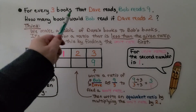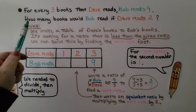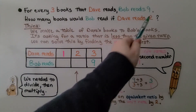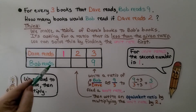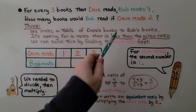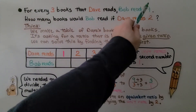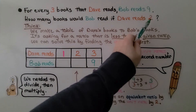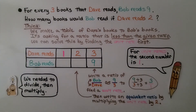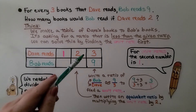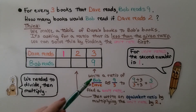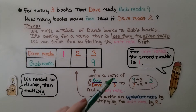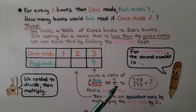For every 3 books that Dave reads, Bob reads 9. How many books would Bob read if Dave reads 2? We make a table of Dave's books to Bob's books. It's asking for a ratio less than the given ratio — we have 3 books to 9 books, and we want to know 2 books to some amount. We solve by finding the unit rate first. We write a ratio of Bob to Dave as 9 to 3, then divide: 9 divided by 3 is 3.